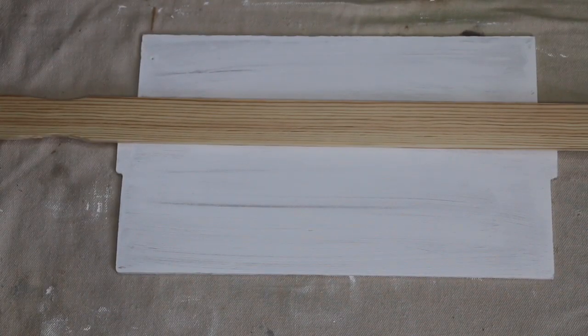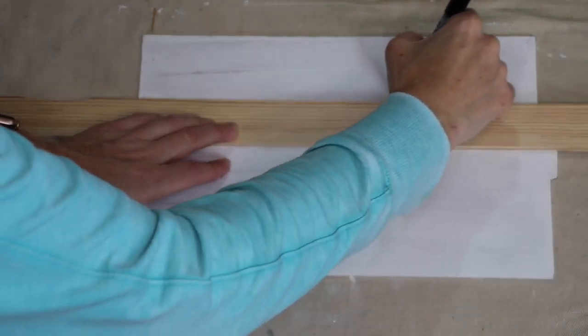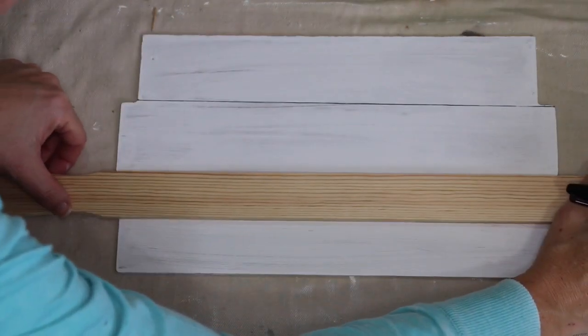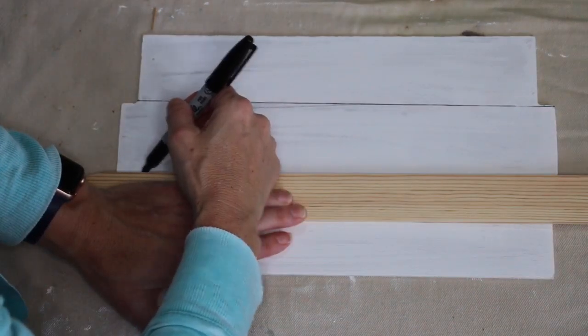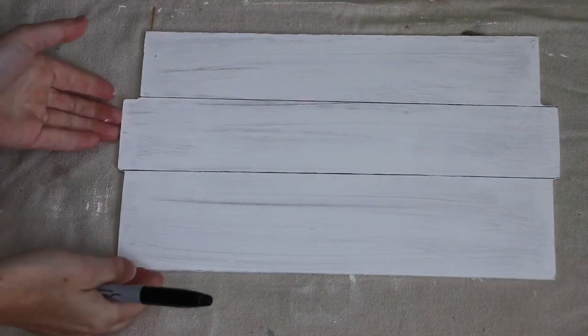Now taking a straight edge of any kind, using a sharpie, draw a straight line from one side to the other, creating a faux shiplap look. You will do this twice so that you will have three different boards going vertically along your sign.